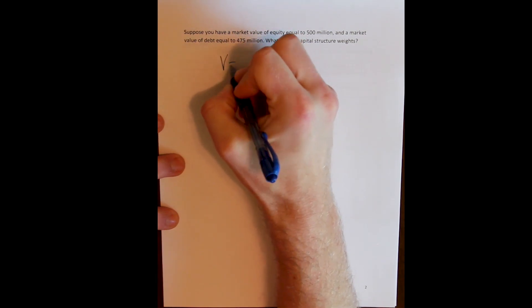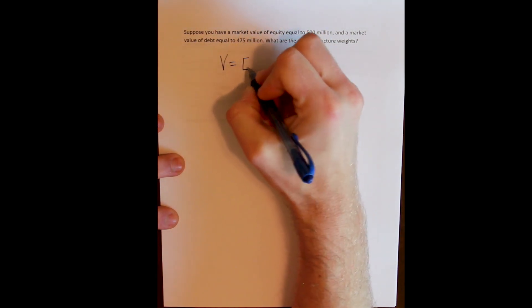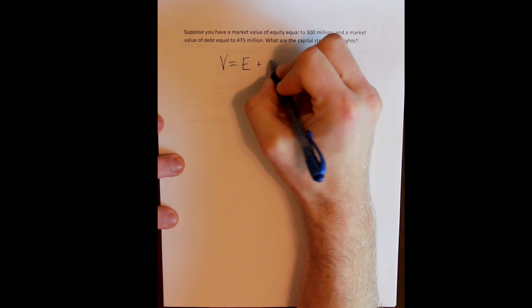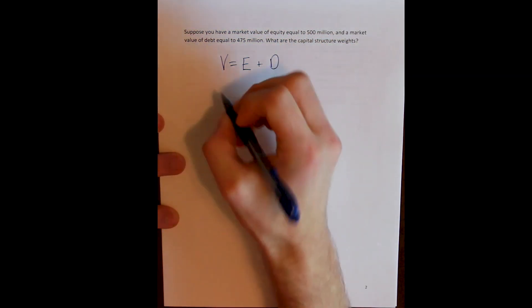So the capital structure weights are the relative values of debt and equity relative to the total value of the firm. And the total value of the firm is equal to the total value of its equity plus the total value of its debt.